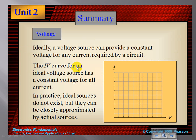Ideally, a voltage source can provide a constant voltage for any current — the graph would show a constant voltage no matter what the current. But in practice, ideal sources really don't exist. We can approximate them pretty closely using actual voltage sources such as batteries and generators.